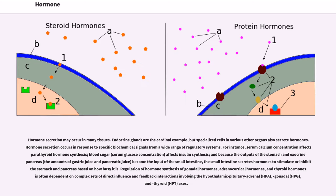Hormone secretion may occur in many tissues. Endocrine glands are the cardinal example, but specialized cells in various other organs also secrete hormones. Hormone secretion occurs in response to specific biochemical signals from a wide range of regulatory systems.